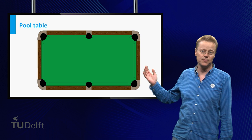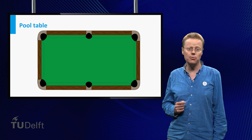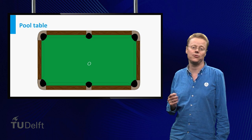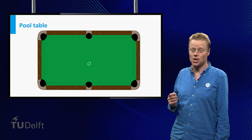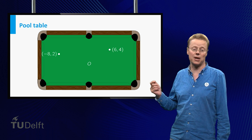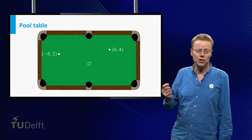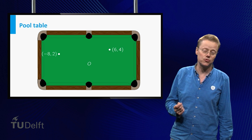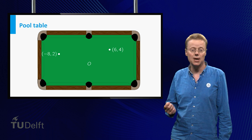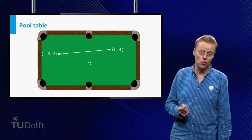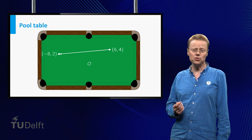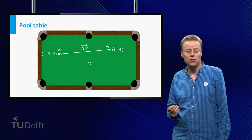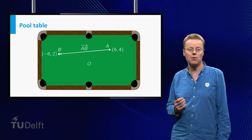Consider this pool table. If you want to indicate a location on the pool table, it can be done by fixing an origin and a horizontal and vertical position of the location relative to this origin O. For example, the point (6,4) and the point (-8,2). If you want to describe a movement on the pool table, this can be done using a vector. The movement from (6,4) to (-8,2) can be represented by an arrow starting at (6,4) and ending at (-8,2). If we denote the point (6,4) by A and (-8,2) by B, the vector in this picture is denoted as AB with a little arrow on top.